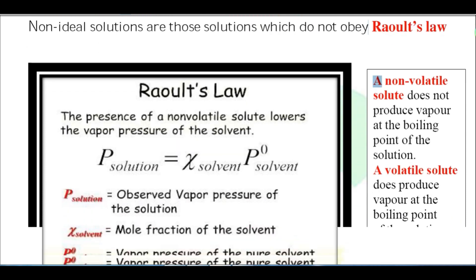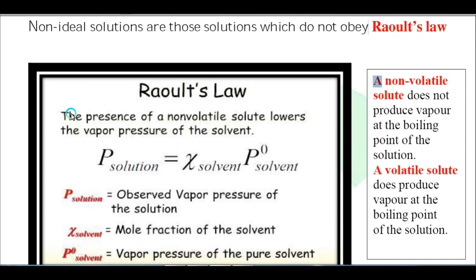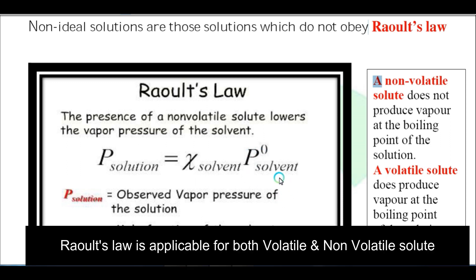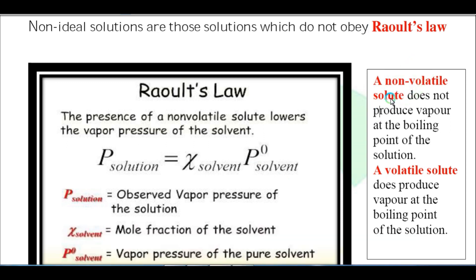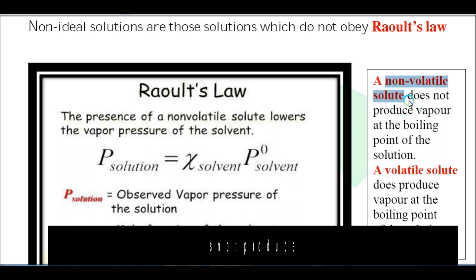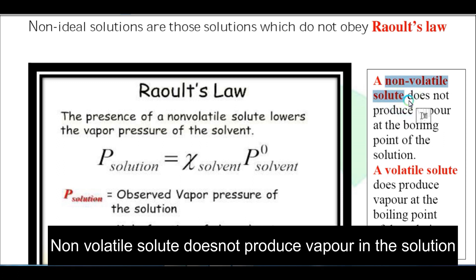So what is Raoult's law? Raoult's law states that the presence of a non-volatile solute lowers the vapor pressure of the solvent. Mathematically, pressure of the solution equals the mole fraction of the solvent times initial pressure of the solvent. We consider the solvent because we have a non-volatile solute. A non-volatile solute does not produce vapor at the boiling point of the solution.